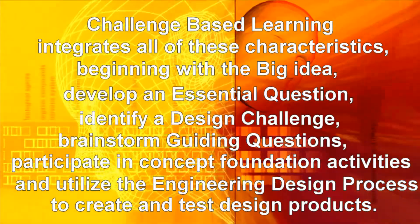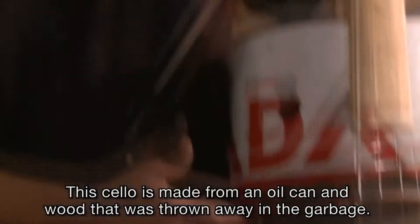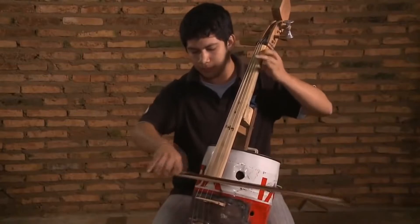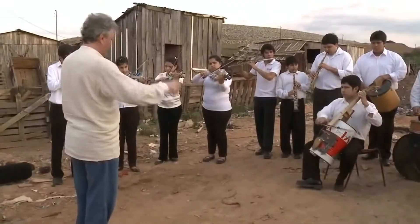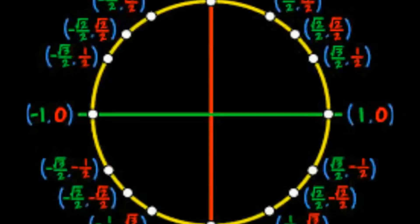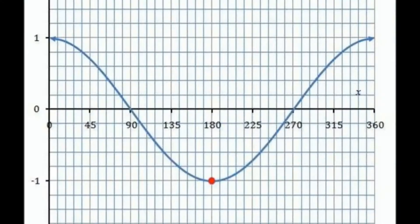Let's look at these pieces and how they fit together. This cello is made from an oil can and wood that was thrown away in the garbage. What is sound? The essential question: how was the musical scale created? We generated interest by looking at a wave generator, and then mathematically tied the unit circle into the sine wave and the cosine wave.